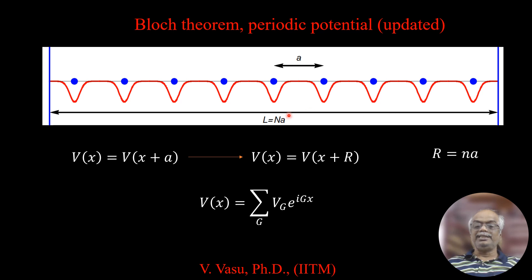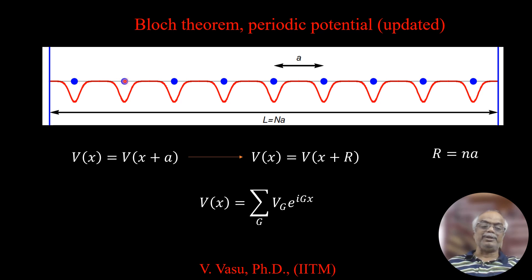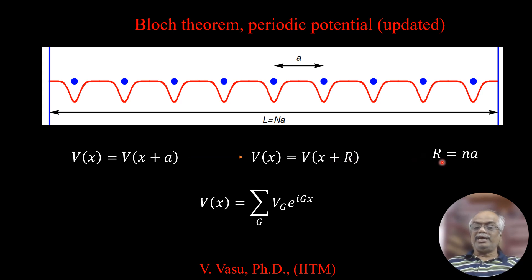Let's define L as the length — the total distance of N units. So L is the length of N number of units. If we have a potential as a function, V of X is equal to V of X plus A. Generally, V of X is equal to V of X plus R, where R is equal to N times A. N is an integer and A is the lattice distance.